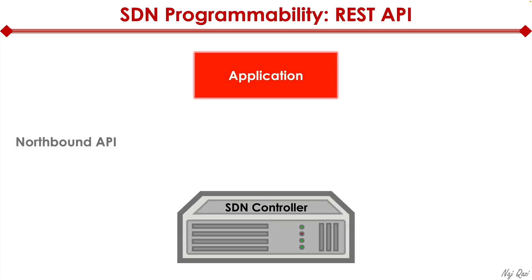So if you were to take an SDN controller and look into the Northbound API, let's assume in this example I designed an application called Nodge app. The whole purpose of this application is to pick a router within our network, and on that router we can go ahead and pull information about all the active and currently operational interfaces on that router and all the configuration associated with each of those interfaces. So what we would do is, in this app, the first step would be to send an HTTP GET URI request to the SDN controller.